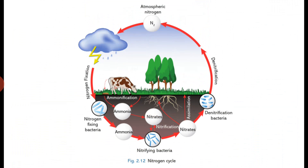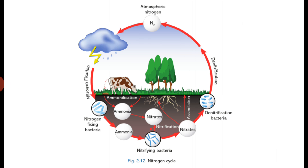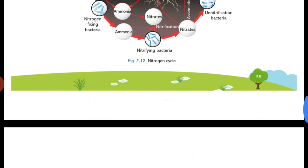Looking at the diagram: nitrogen from the atmosphere undergoes fixation through lightning and nitrogen-fixing bacteria, converting into nitrates and ammonia. Plants absorb these. An animal is shown above — after it dies, ammonification occurs and it converts into ammonia. Nitrifying bacteria convert that ammonia into nitrates, which plants absorb again. On the right side, denitrifying bacteria convert inorganic nitrogen compounds back into atmospheric nitrogen through denitrification. Looking at the figure once will make this clear.